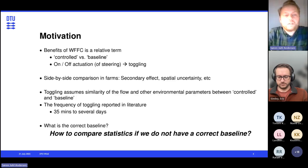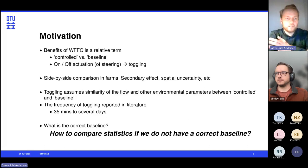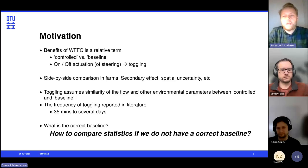We also have other ways of doing experiments that could be a side-by-side comparison where we have two turbines in a farm, for instance, that have the same conditions, and then we control one of them and have the other one as a reference. But that has its own complication in terms of secondary effects, spatial uncertainties, etc. So here we are just going to focus on toggling, and the underlying assumption when we do toggling in the field is basically that we assume similarity of the flow and other environmental parameters between controlled and baseline.